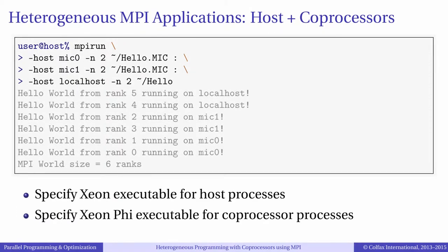We have already seen how to start an MPI application on a coprocessor using the tool MPI run. Now if we want to use a heterogeneous cluster or multiple coprocessors, we just need to add their host names in the MPI run command. For example, here we run two MPI processes on coprocessor mic0, two on mic1, and two more on the CPU.